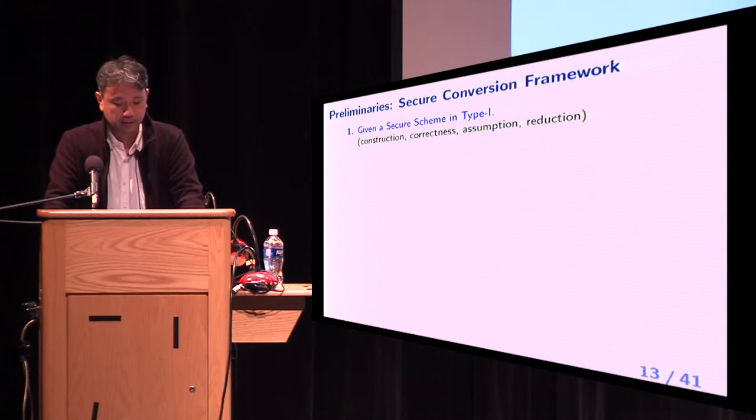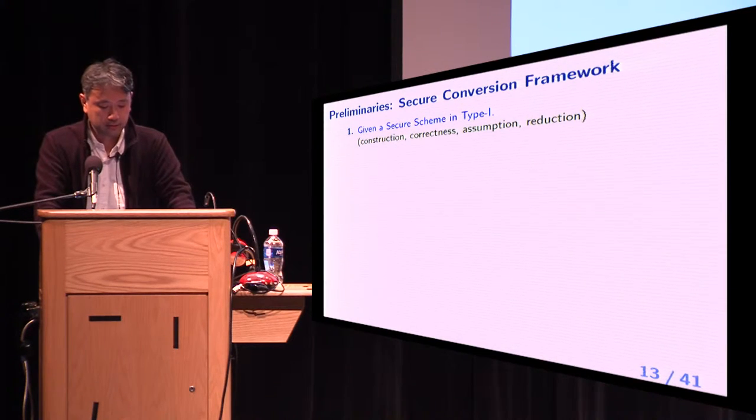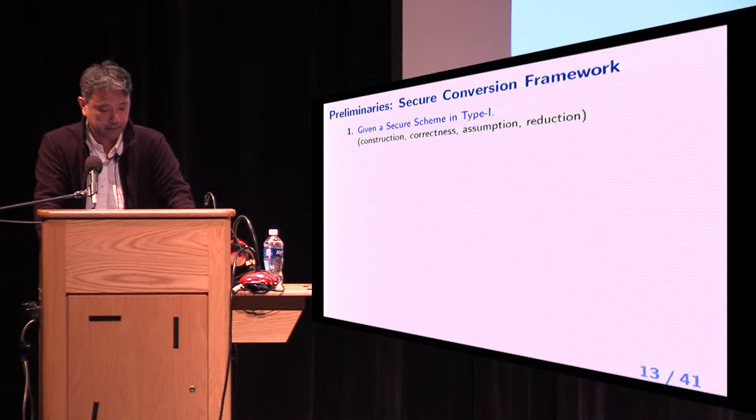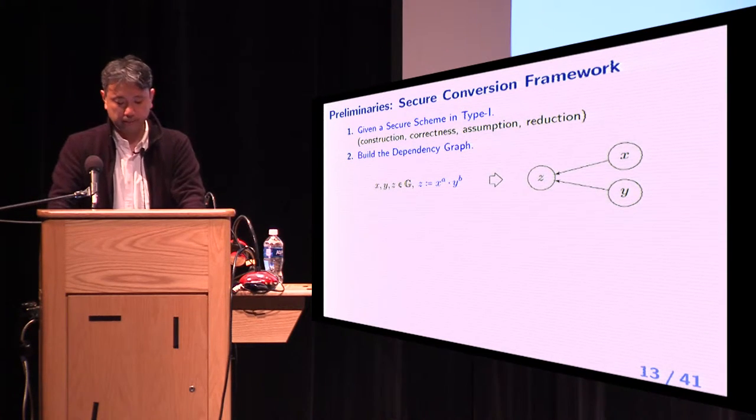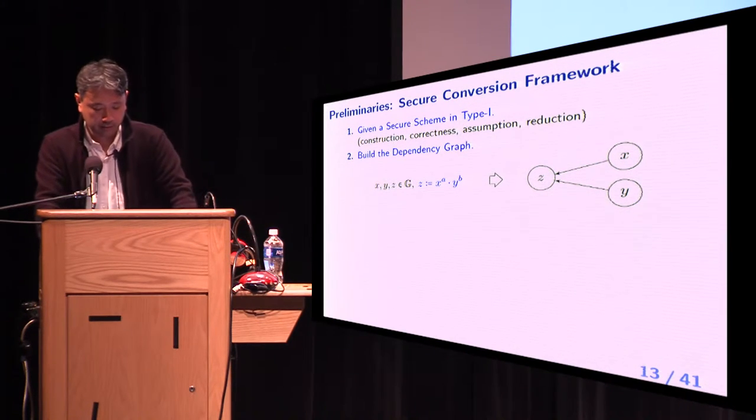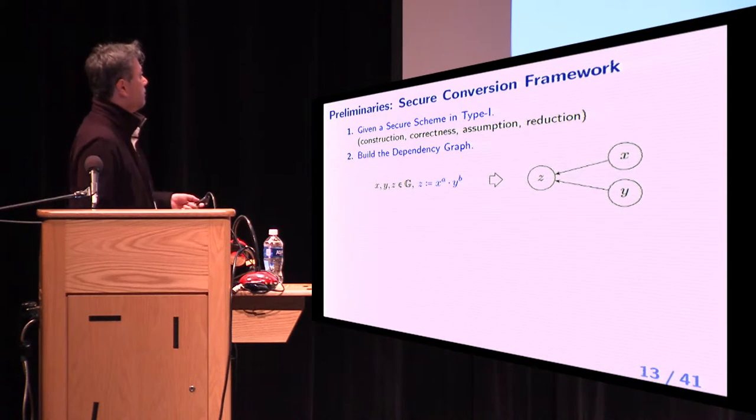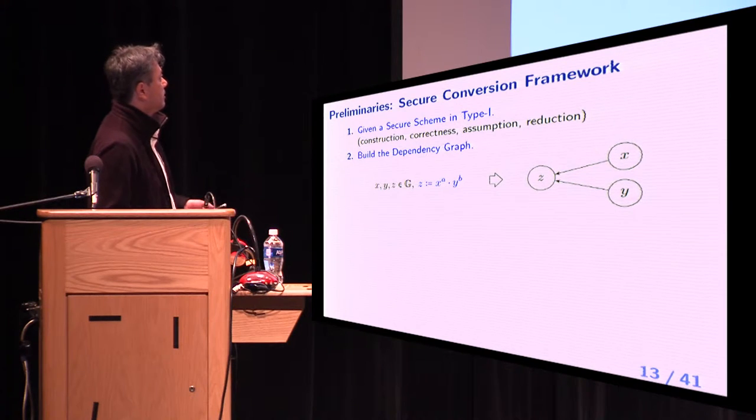IP-conv is based on the secure conversion framework, which consists of following steps. Step 1, given a secure scheme in type 1, which includes all algorithms in construction, correctness, assumption, and reduction. Step 2, build the dependency graph, which represents all the dependencies between source group variables in the algorithms. For example, this assignment statement becomes this directed graph.